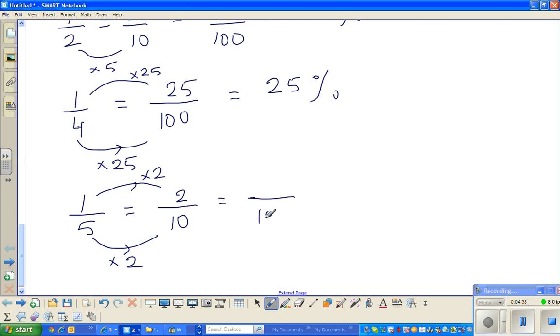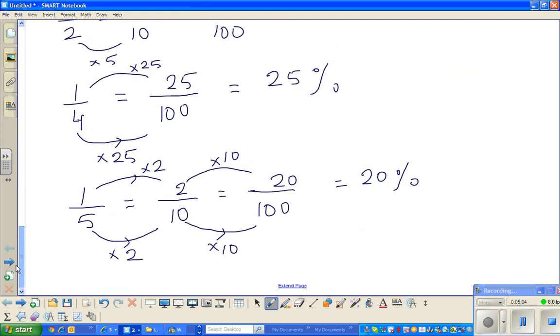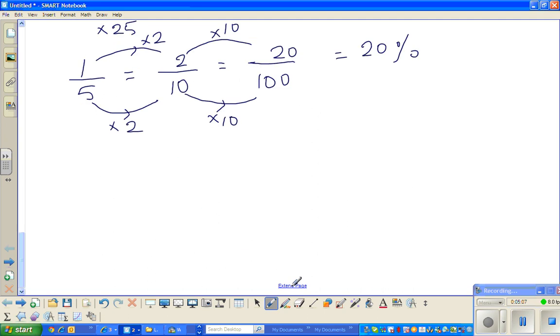And I want to write as 100. So 10 goes in 100, how many times? 10 times 10 is 100. So you do the same thing to the top number. So this is 20 out of 100, which is 20%. Now these facts, if you know off your head, you can be a genius. Half is 50%, a quarter is 25%, one fifth is 20%, and if you don't know, it doesn't matter.